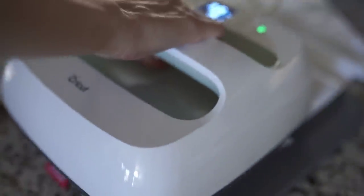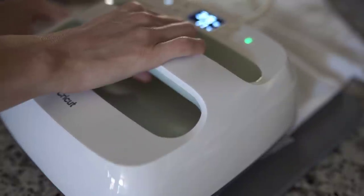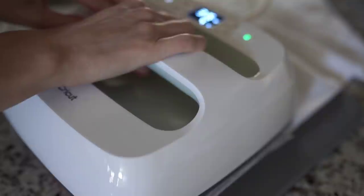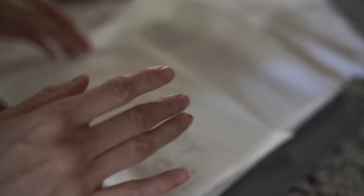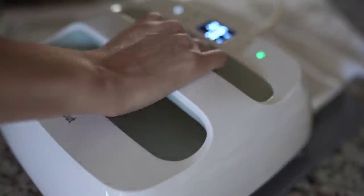Cricut has a really great heat guide online that you can use. So you input your material project and it will tell you the exact time and heat that is recommended for your project. So with the push of a button, you hold it on for just about 15 seconds. And for my project, it was recommended to do this twice. So I did 15 seconds, gave it a little break, and then 15 more seconds.